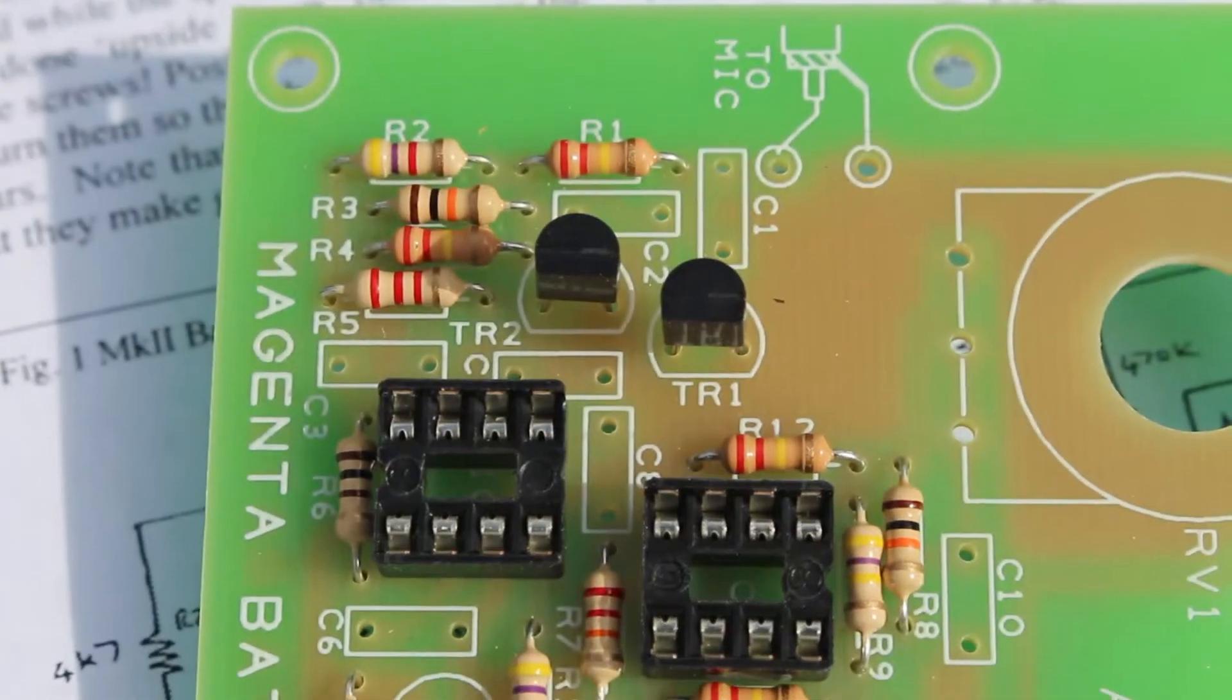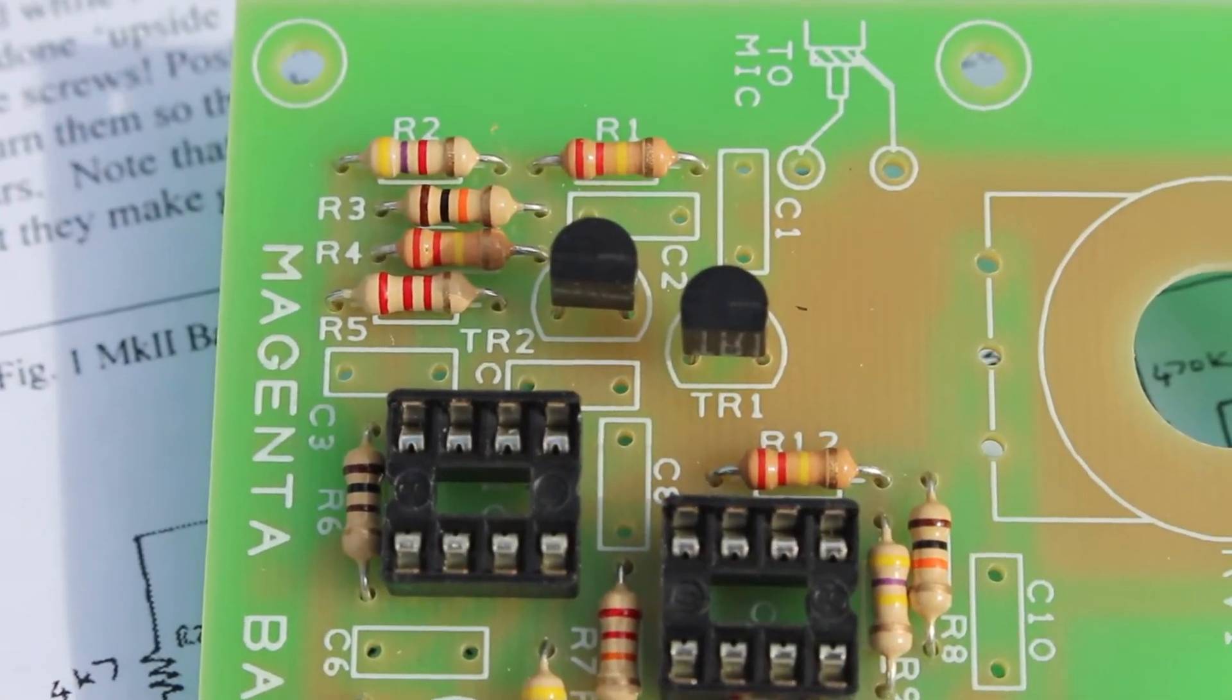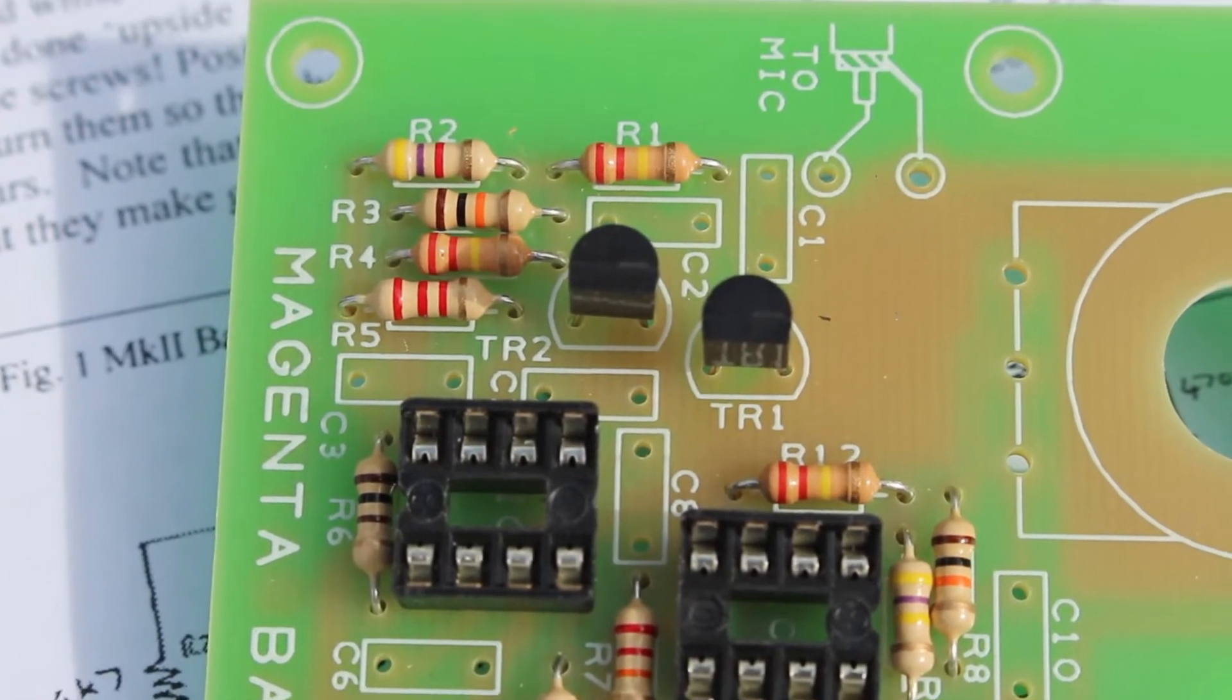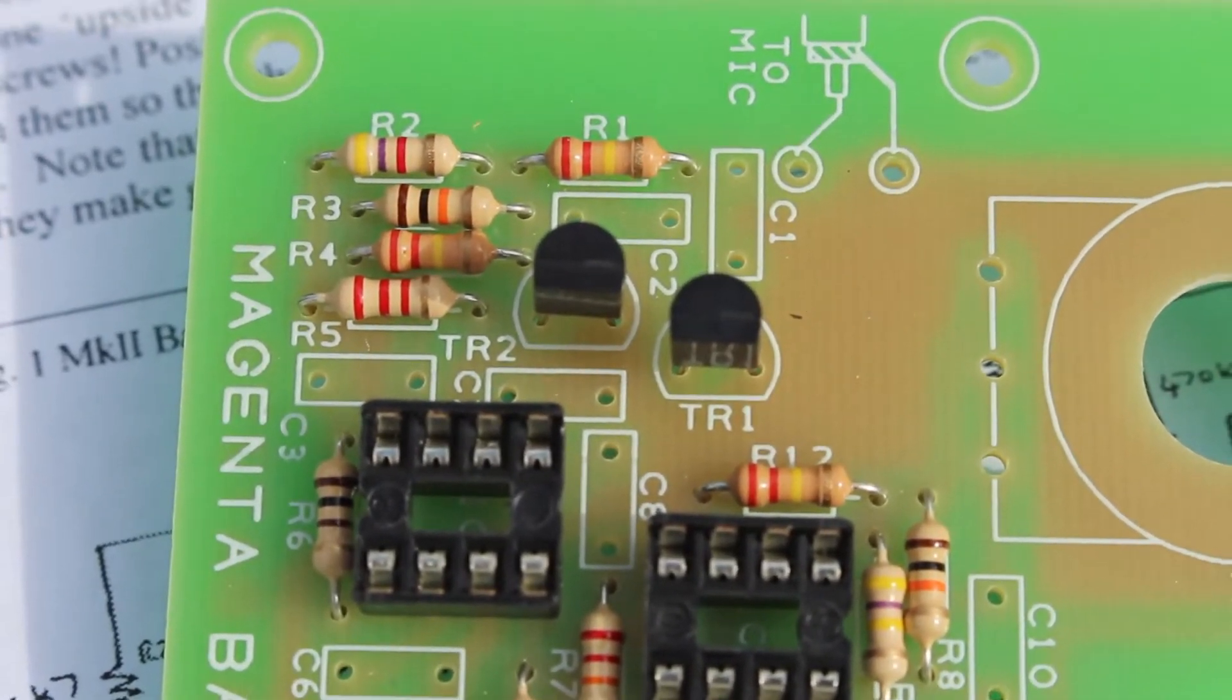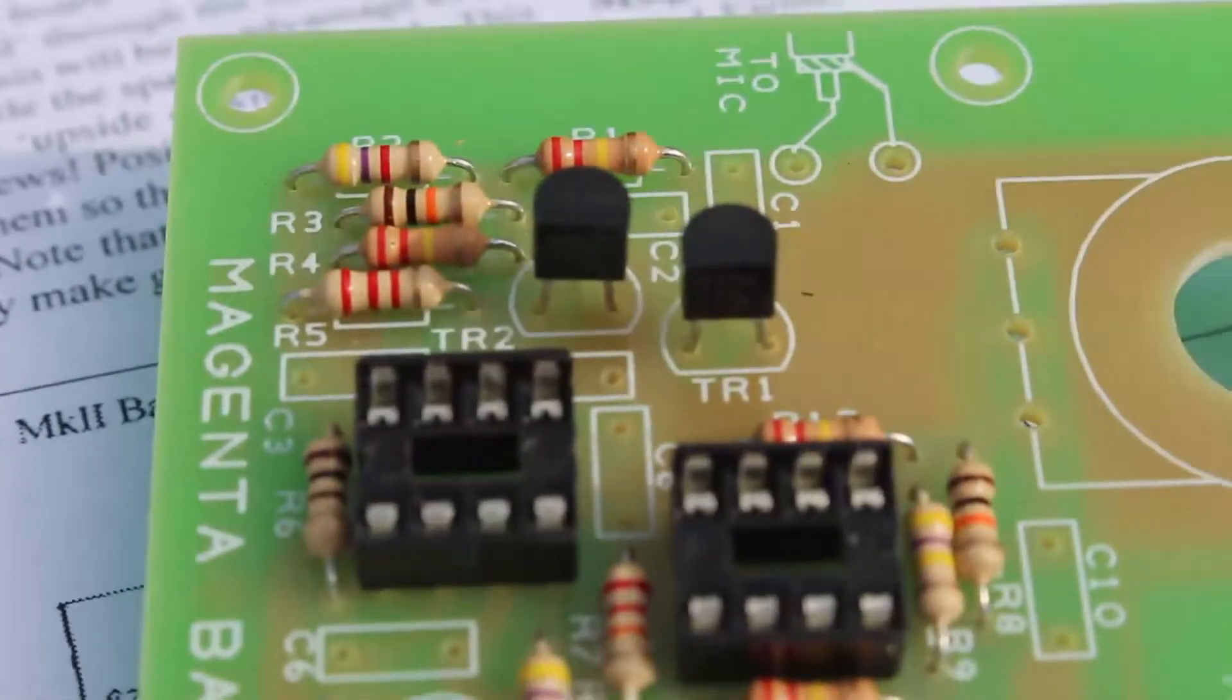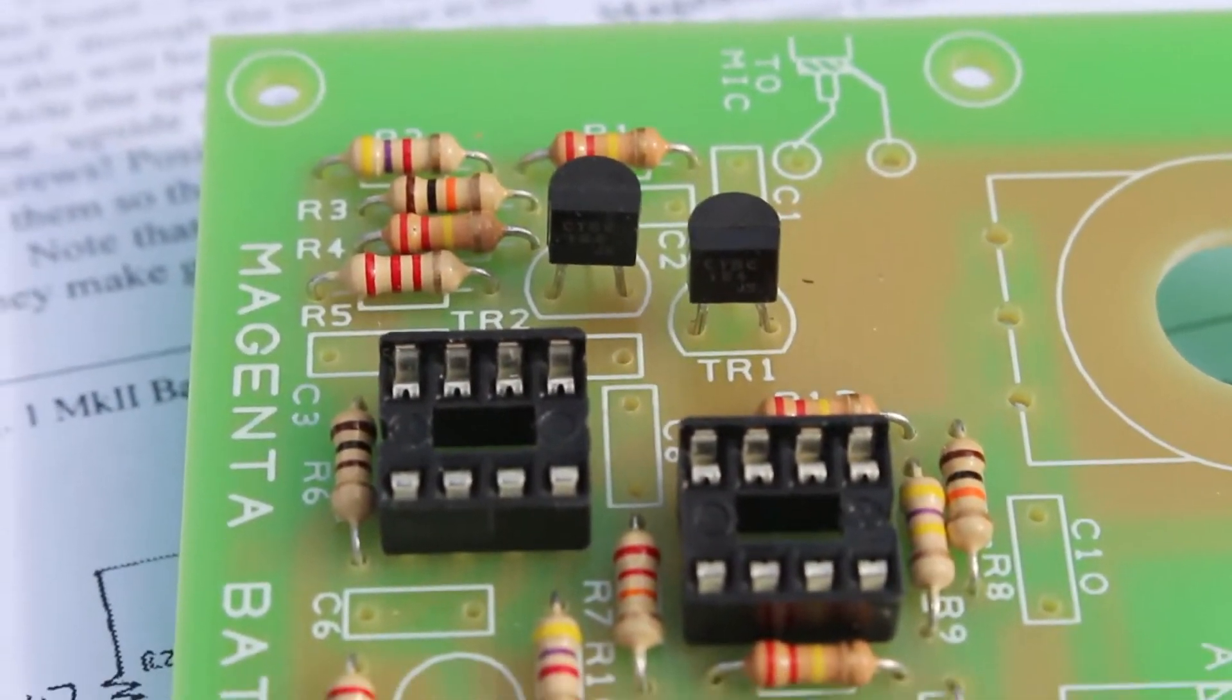Once you've got the chip holders in, you then got to do the two transistors. Both transistors are the same so it doesn't matter which one goes where. Just follow the shape and also you should try to mount them so they're not sticking up too high.